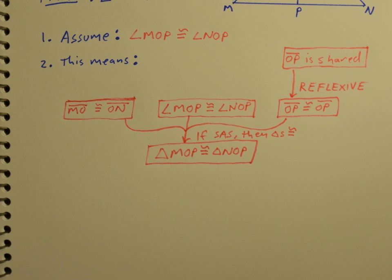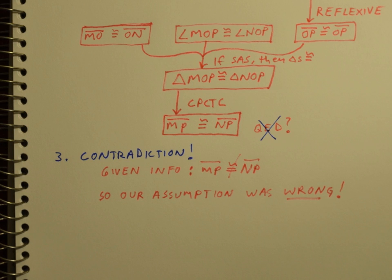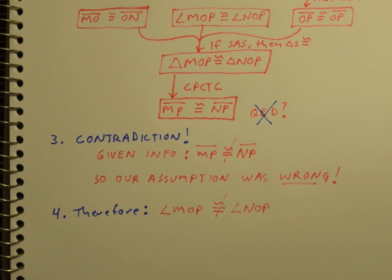Well, that means that MP must be congruent to NP. But that specifically contradicts given information. Therefore, our assumption in step one was wrong, and we must conclude the opposite: angle MOP is not congruent to angle NOP.